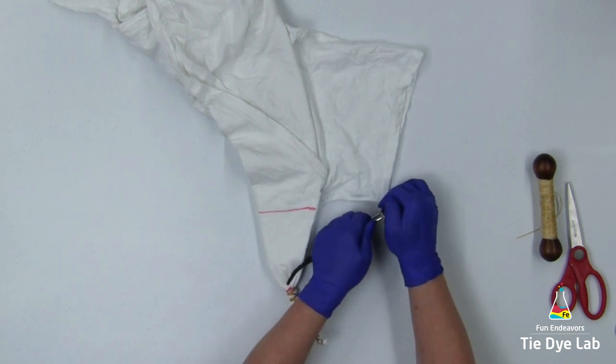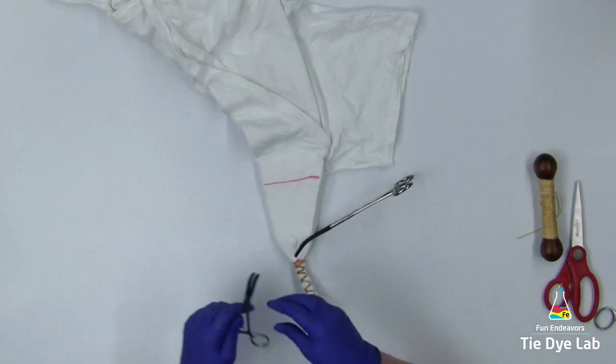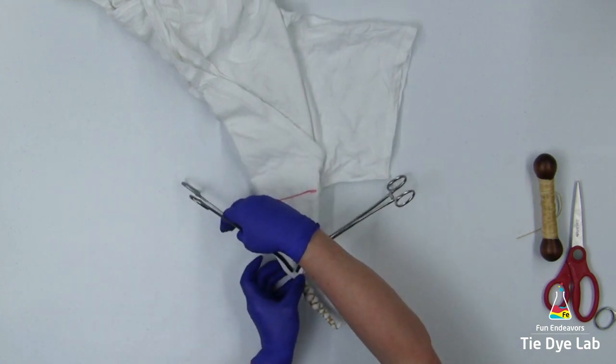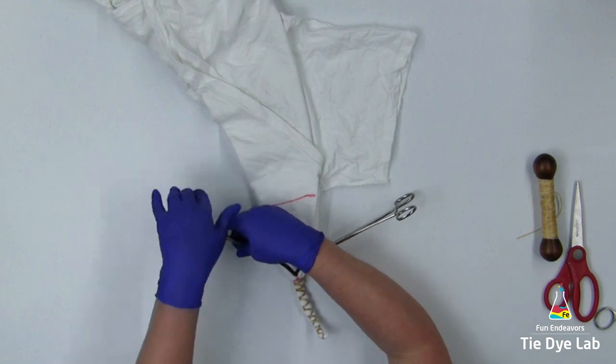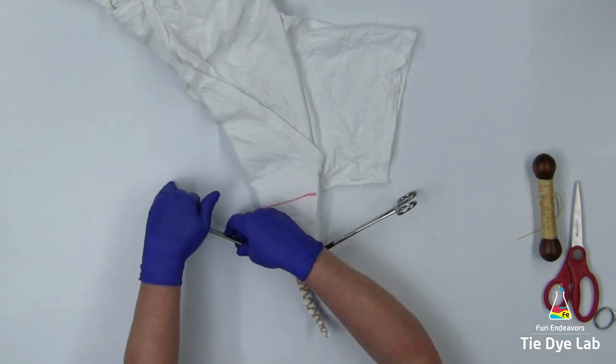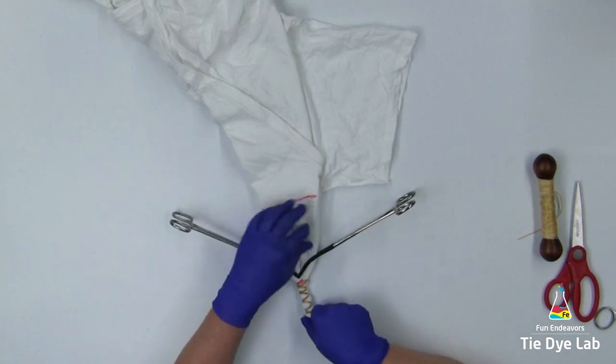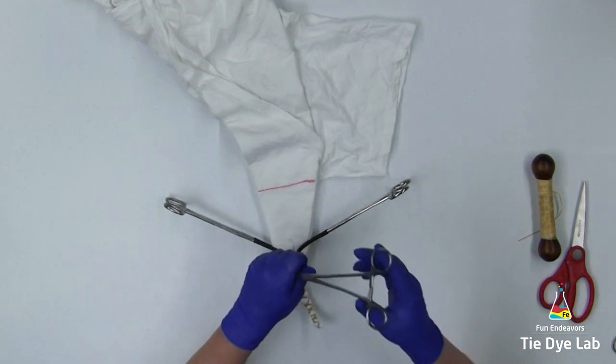I'm going to use two hemostats for each row of sunflower petals. These are curved hemostats, and I'm pointing the curve down toward the center of the sunflower. I'm trying to make the hemostat ends touch in the middle, and I'm going to lock them down as tightly as I can onto the shirt.